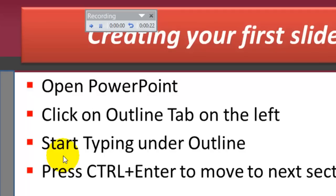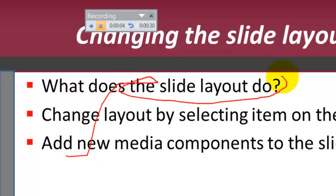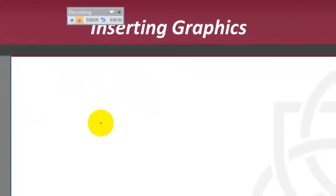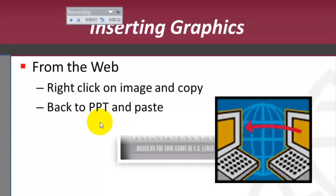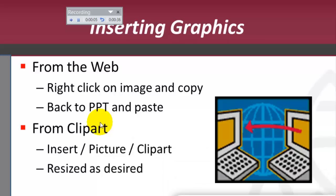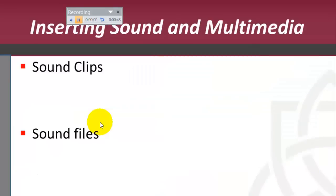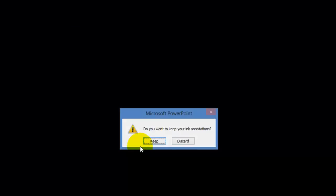Go through the slides with all the different components, using the pen tool (Ctrl+P) to annotate on screen and highlight different components as you talk. To move between slides, press the spacebar. Go through the PowerPoint as if it were a live presentation. Once complete, it will ask whether to keep the ink annotations — click Keep. Save and upload the file; it remains in PowerPoint format.